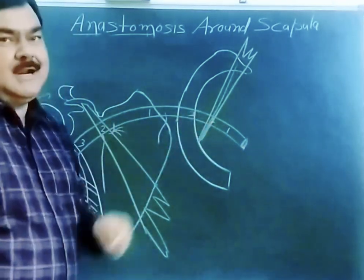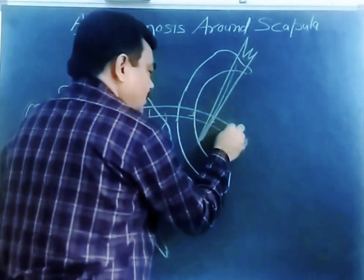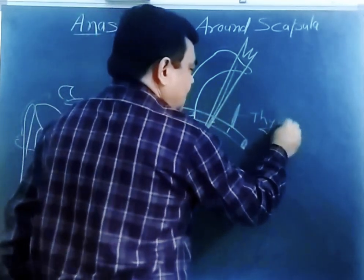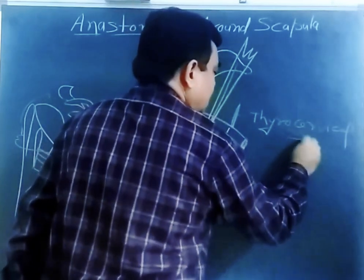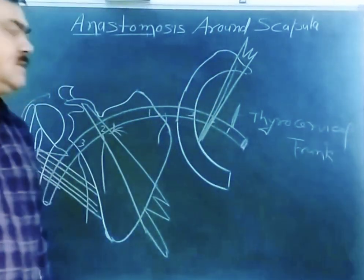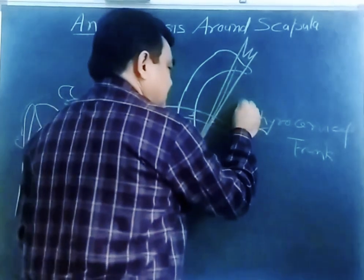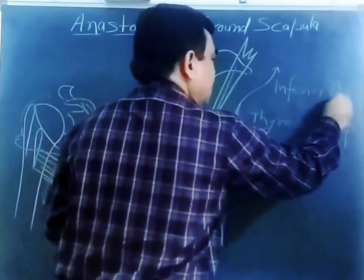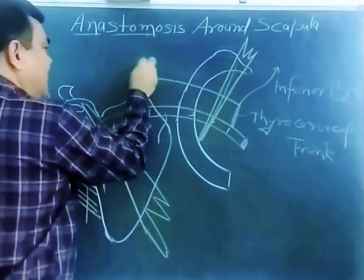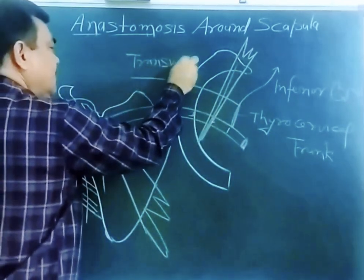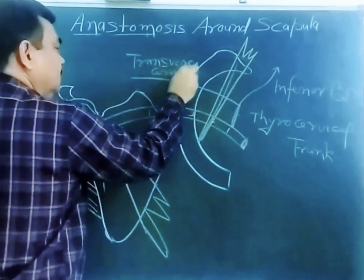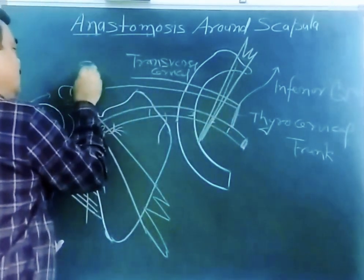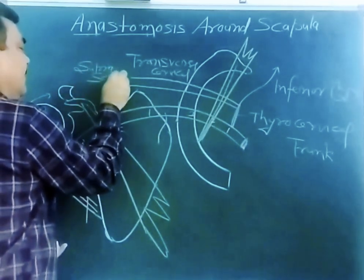The first part of the subclavian artery gives a branch known as the thyrocervical trunk. The thyrocervical trunk divides into three branches: the inferior thyroid artery, the transverse cervical artery, and the suprascapular artery.